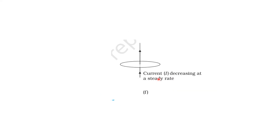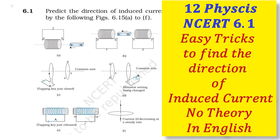In this case, it is given that current I is decreasing at a steady rate — meaning the rate of change of current with respect to time is constant. If the rate of change of current with respect to time is constant, no change in magnetic flux will be produced. If there is no change in magnetic flux, no induced current will be produced. So here the induced current is zero. I hope you understand the concept very well. Thank you for watching.